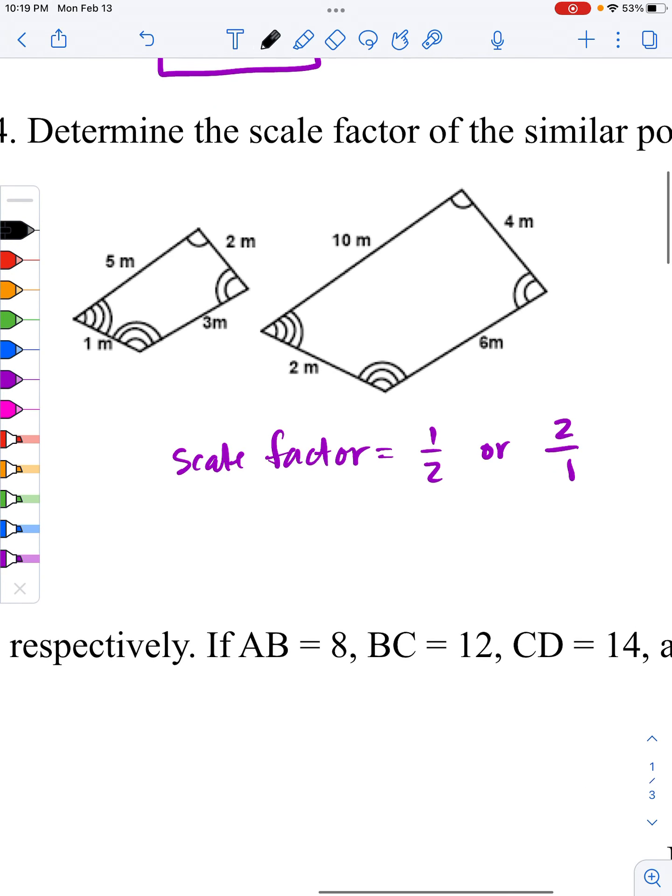Here, it says, determine the scale factor of the similar polygons. And if you notice, from left to right, there are two answers to this. From 5 to 10. And that works because these are the corresponding parts. It's between 4 and 1, 4 and 1.